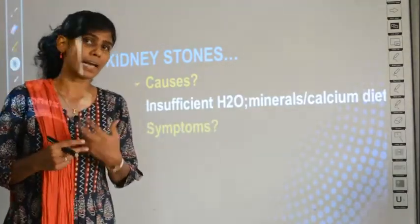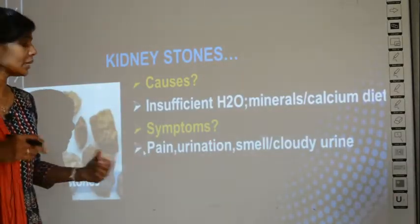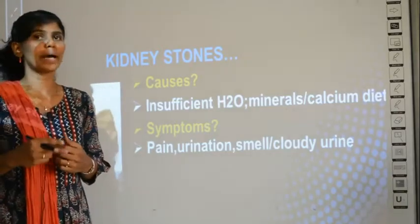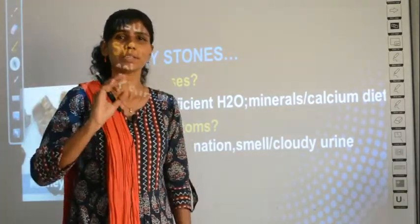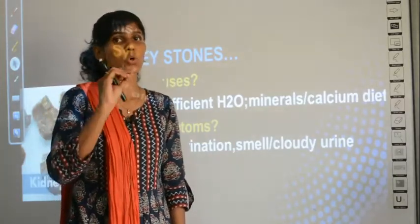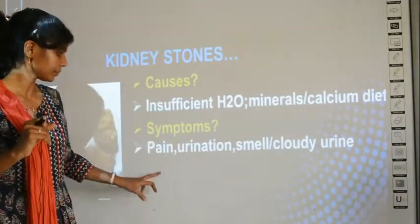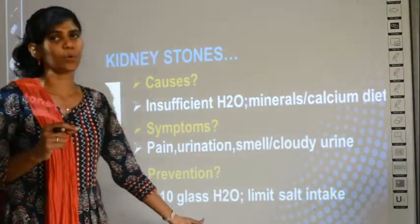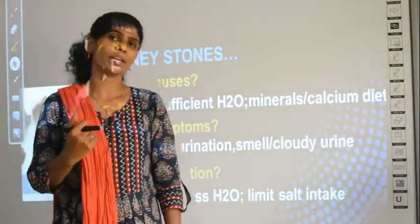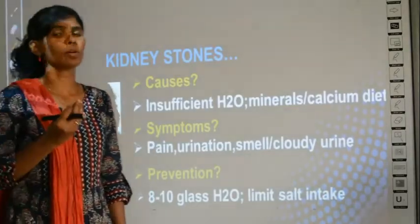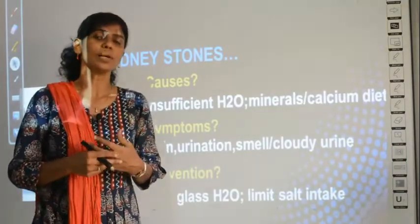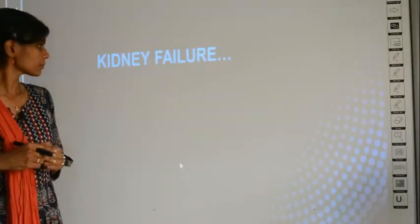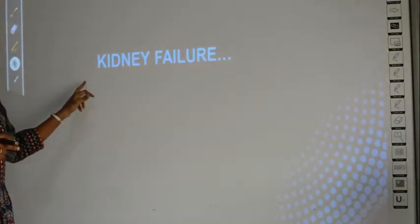Symptoms of kidney stones include pain during urination, foul-smelling urine, and cloudy or turbid urine — normally urine is clear, so cloudiness is a sign of stones. To prevent stones, drink eight to ten glasses of water daily and reduce intake of salts, including not just table salt but other salts like sodium and potassium compounds.